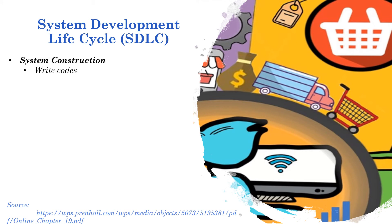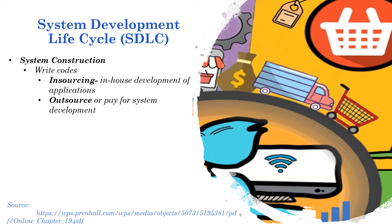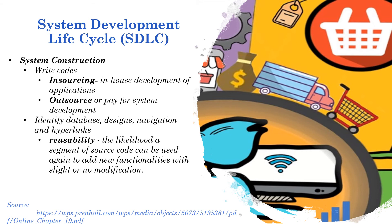For system construction, we have insourcing, which is in-house development of applications, and outsourcing, which means paying for system development. System construction requires identifying the databases, designs, navigations, and hyperlinks. We also have to consider reusability — the likelihood that a segment of source code can be used again to add new functionalities with slight or no modification — and interoperability, which involves connecting people, data, and diverse systems.